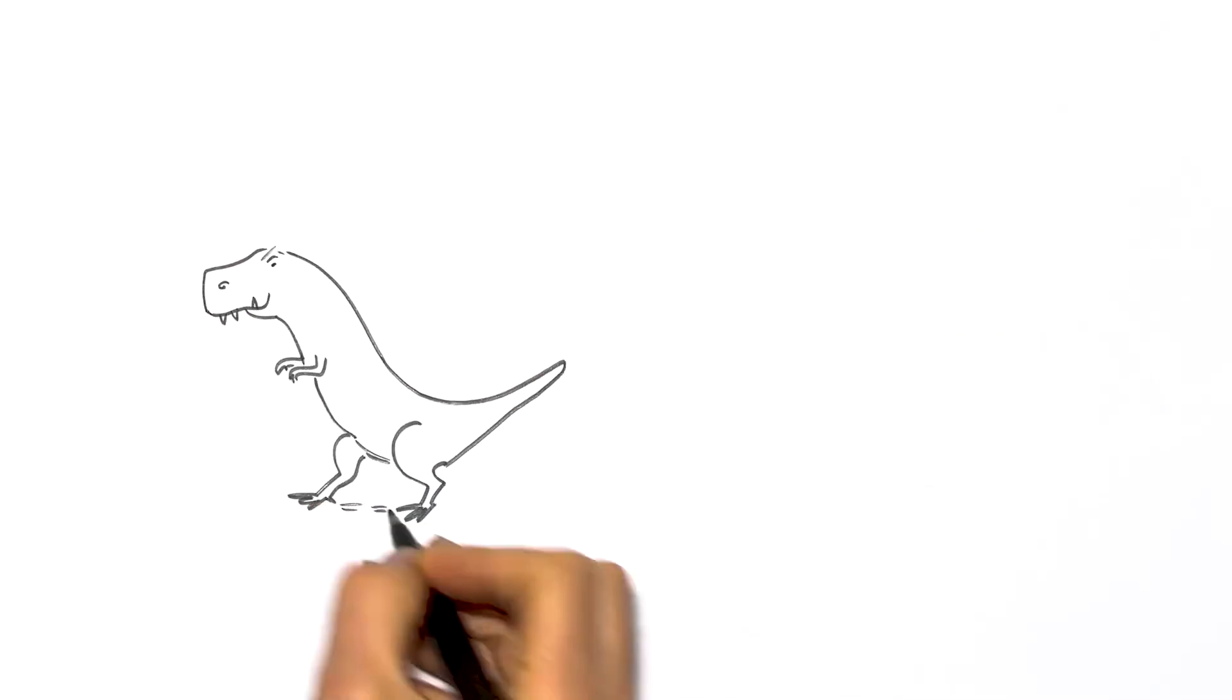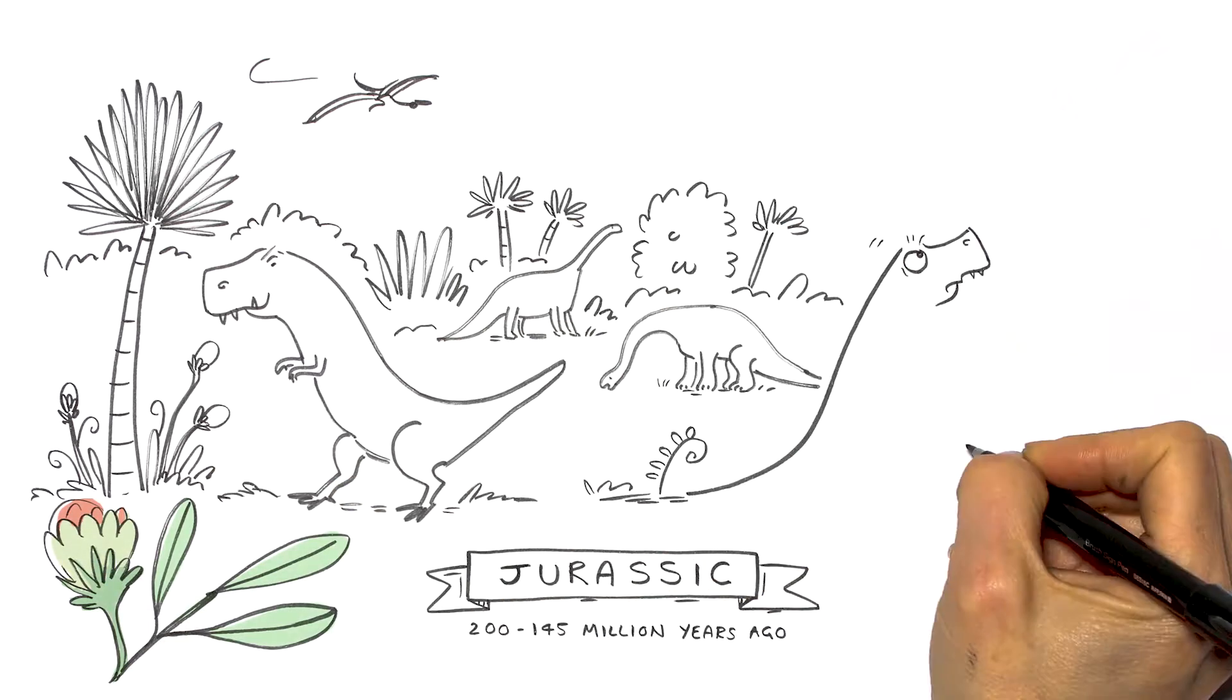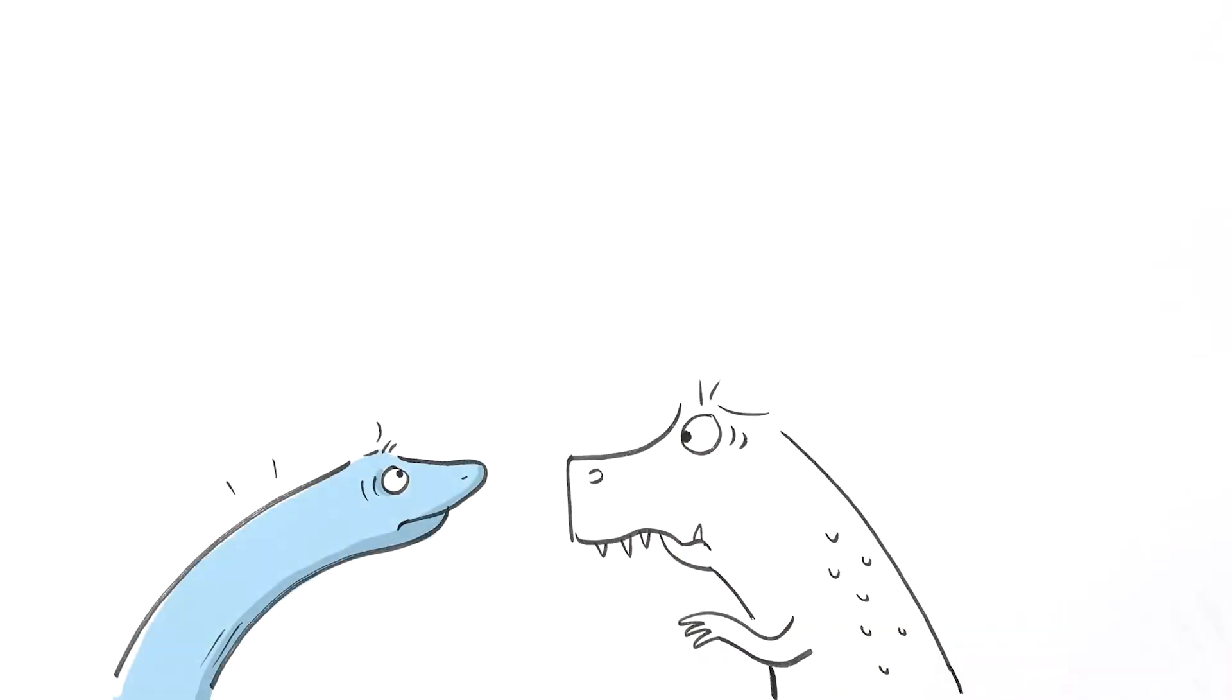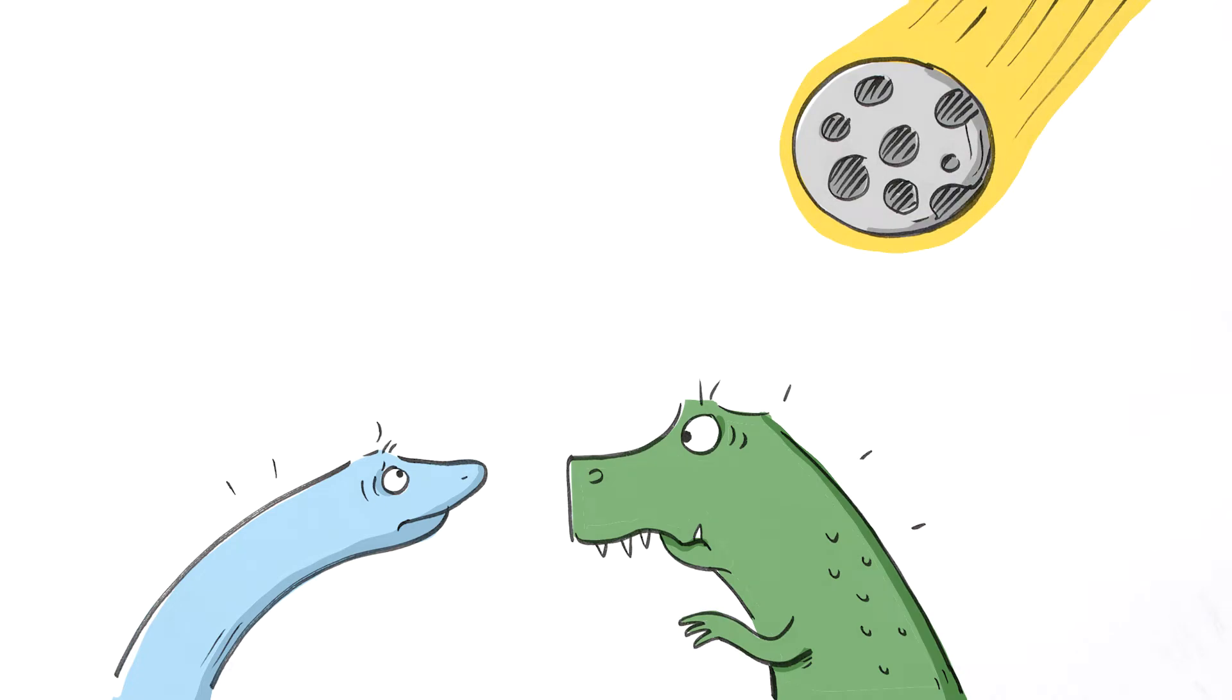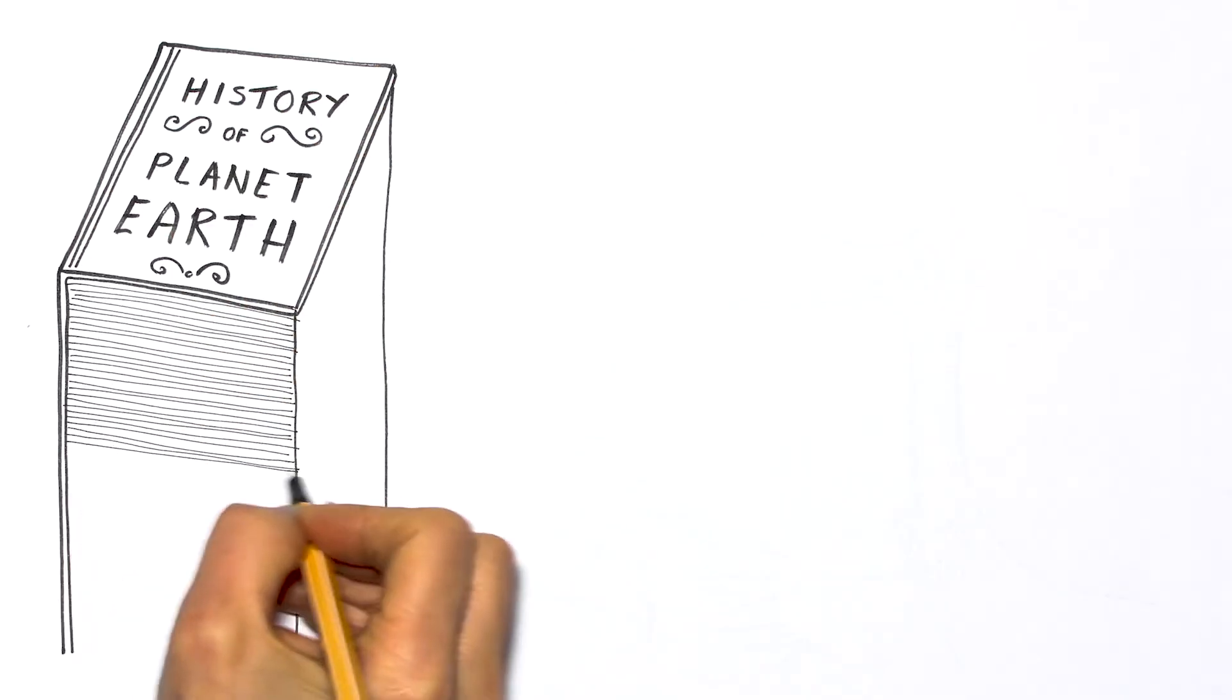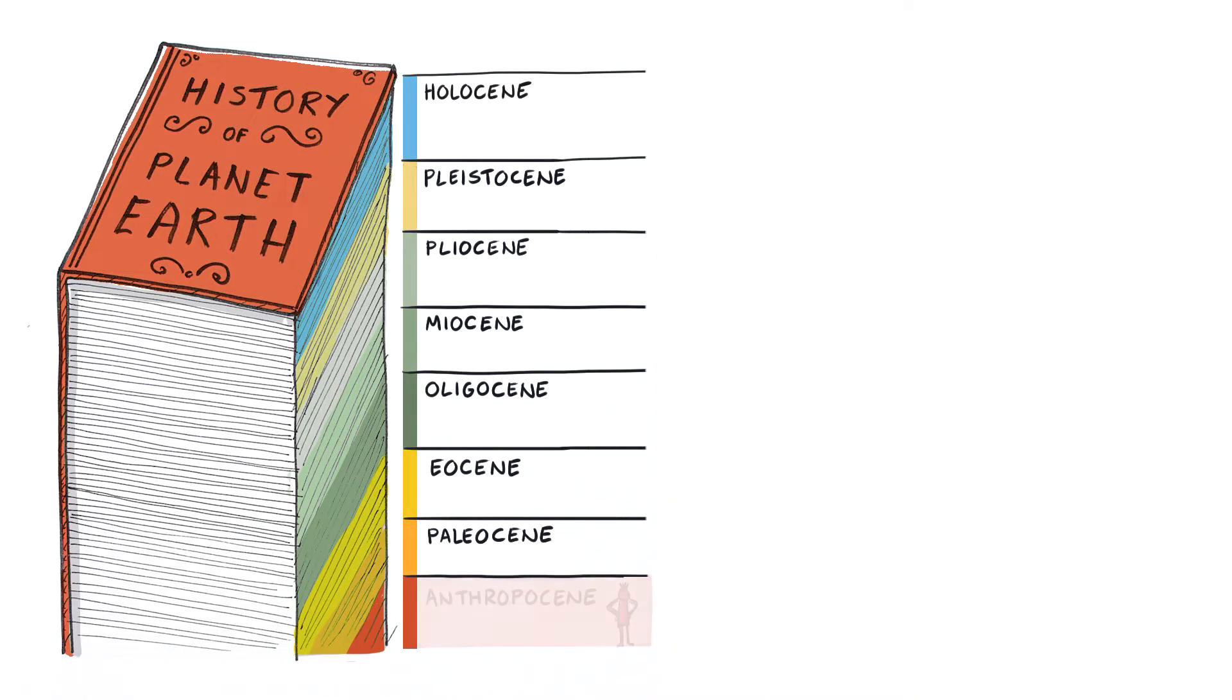My ancestors, the dinosaurs, ruled the world once in a time called the Jurassic. But due to some unfortunate and unforeseen events, the Earth was pushed into yet another new era of time. Each time period has a name and a story to tell, adding another chapter to the history of planet Earth.